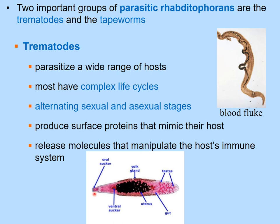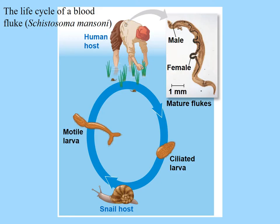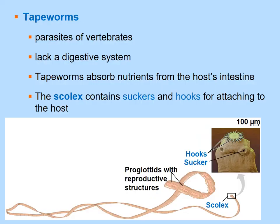Trematodes can alternate between multiple hosts — for example, a snail can transmit the parasite to a human, which serves as the final host where the organism feeds. The life cycle of a fluke illustrates this multi-host transmission pathway.